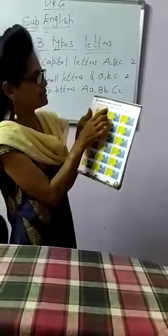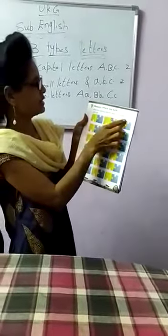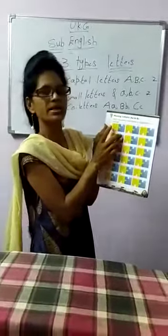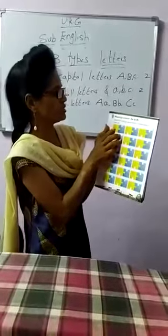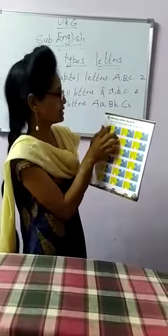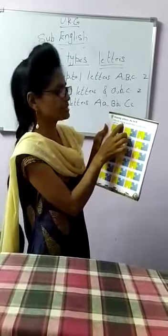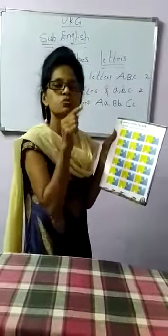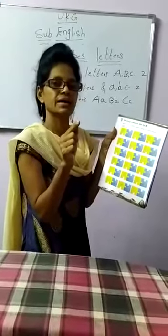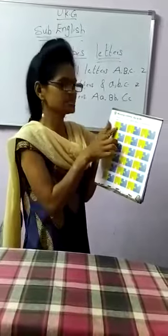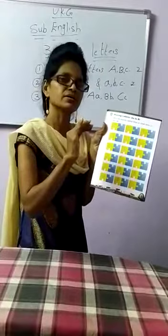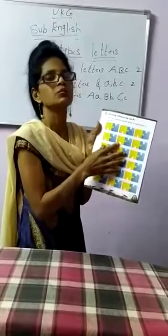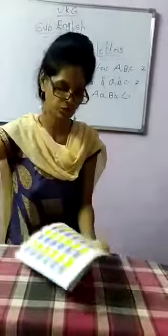Now see page number 5: Missing letters A to R. Write the missing capital letters or small letters in each set. When they will ask you to write the missing capital letter, they will give the small letter and won't give you the capital letter. So you see the capital letter is written on one side — you have to write the small letter. When they give you the small letter, by seeing that you have to write the capital letter. For example, I will show you all how to write.